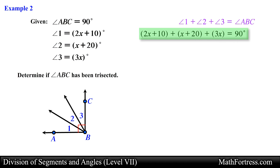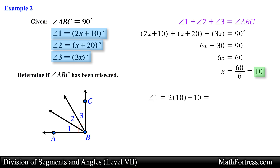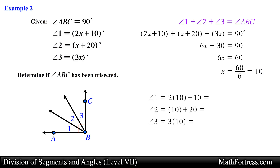From here we can solve for x. We first collect like terms, then subtract 30 from both sides, then divide both sides by 6 — obtaining x equals 10. Now we substitute x into the algebraic expressions for angle 1, angle 2, and angle 3. Simplifying each expression, we obtain 30 degrees for all three angle measurements. Since all three angles are congruent, we conclude that angle ABC has been trisected.